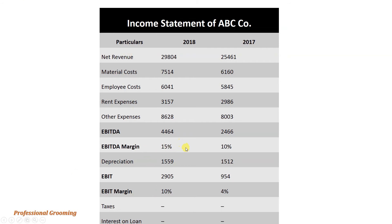Now let's discuss EBIT. After calculating EBITDA, we also need to subtract the depreciation value to get Earnings Before Interest and Taxes. The EBIT figure is 2,905, and the EBIT margin is 10%, calculated by dividing EBIT by net revenue. After that, we deduct taxes and interest on loans to arrive at net profit. The key point is: EBITDA comes before the depreciation expense, while EBIT (operating income) comes after the depreciation deduction.